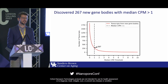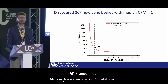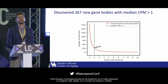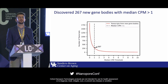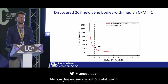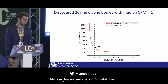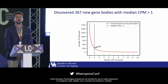Sort of the cherry on top: we discovered 267 new gene bodies with a median CPM greater than one. By new gene bodies I mean RNA coming from unannotated regions of the genome — regions where you don't expect to find RNA. We're currently working with publicly available mass spec datasets from the same brain region to try to validate them at the protein level, and also doing inference analysis to find common domains with known proteins. We're excited to start looking into what these genes might be doing.